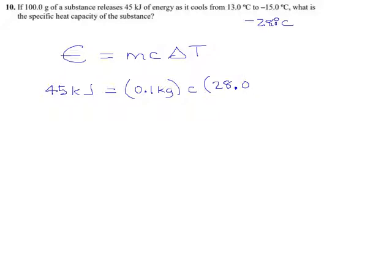There we are. So 45 equals—we have the c just sitting there, can't do anything with that yet—but we can multiply these numbers. 0.1 times 28 gives 2.8c, and then we divide both sides by 2.8 to get c by itself.